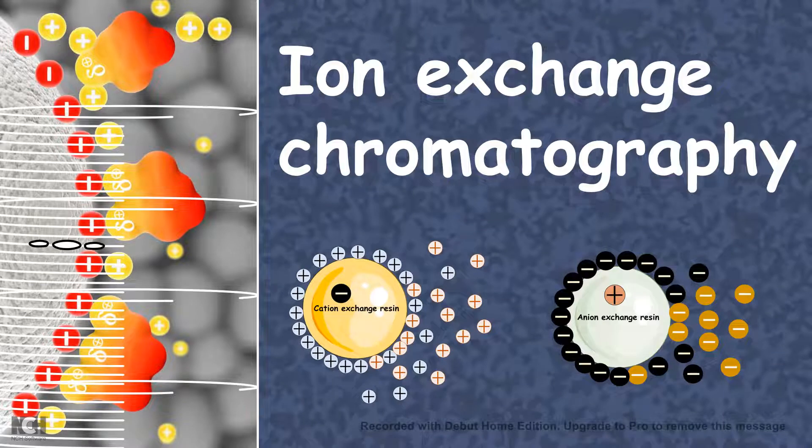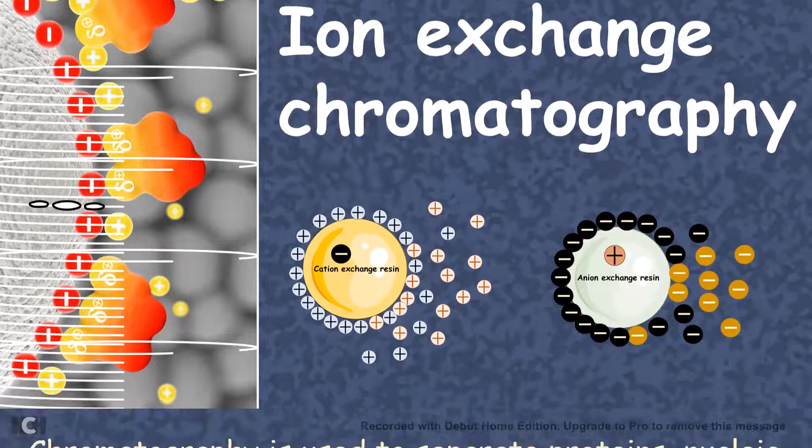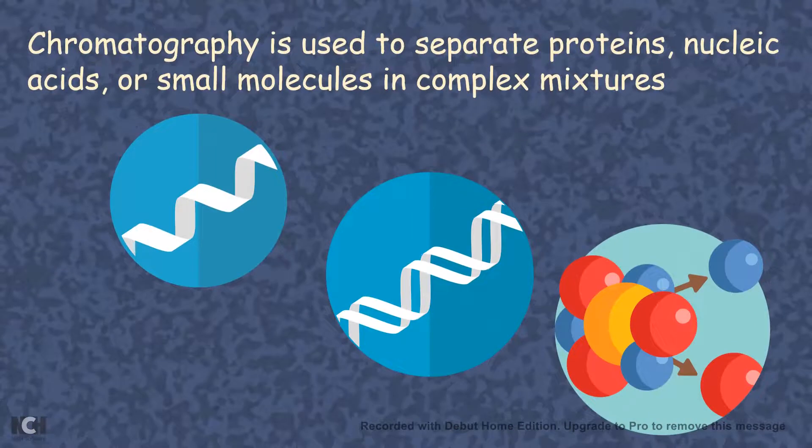Now in this installment we're going to talk about ion exchange chromatography. Chromatography is a simple technique to separate proteins, nucleic acids, and many other small molecules and biological materials from a complex mixture.